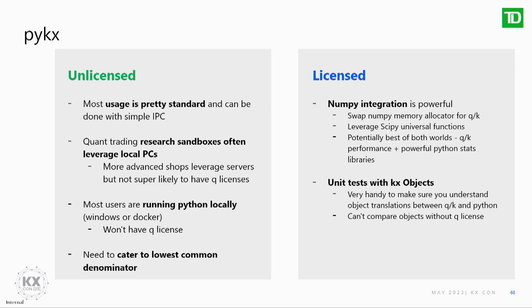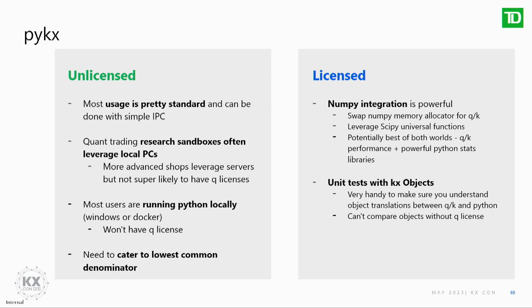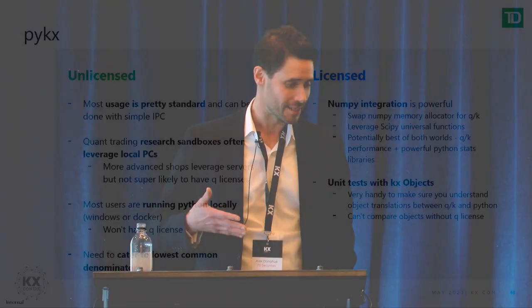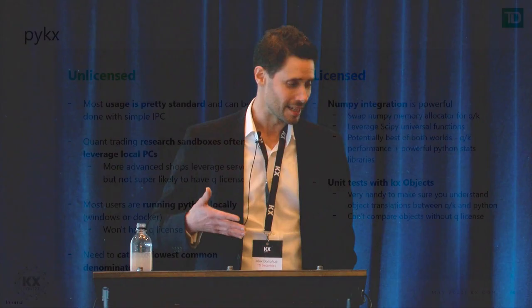My final thoughts are on PyKX. There's an unlicensed and a licensed version. For probably 90% of our use cases, all we need is simple IPC — just calling a function, returning it, and doing some plotting. This is really helpful because in most cases our quant trading team is not running on a server; they're usually running stuff on their Windows box. Having a KDB license on every one of those would be cost-prohibitive, especially with a very large number of people across many different assets. So we really try to cater to the lowest common denominator and use the unlicensed version quite heavily.